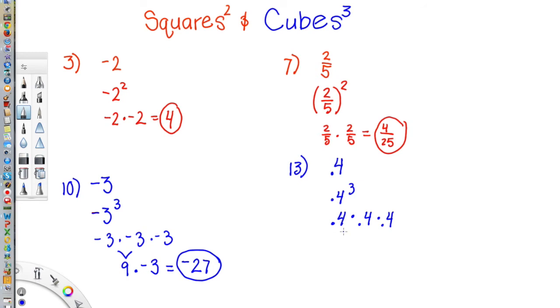And four tenths times four tenths is, well, I know four times four is 16. And I have one decimal place here, and I have another decimal place here. So I have two decimal places together in this multiplication problem. So that means I need to move my decimal point one, two places, to the left. So four tenths times four tenths equals 16 hundredths, times one more four tenths.